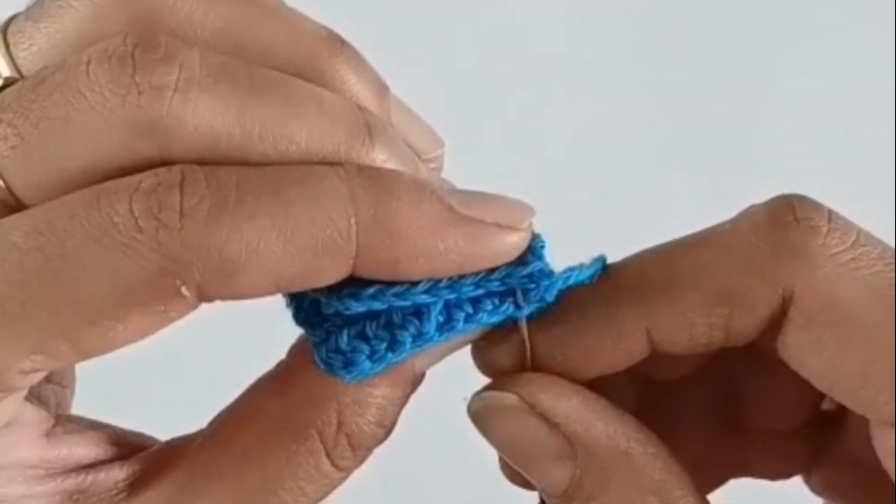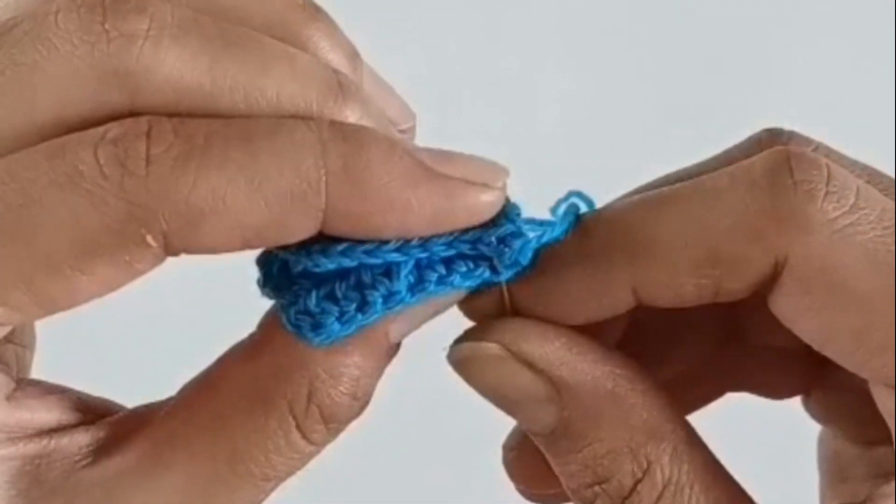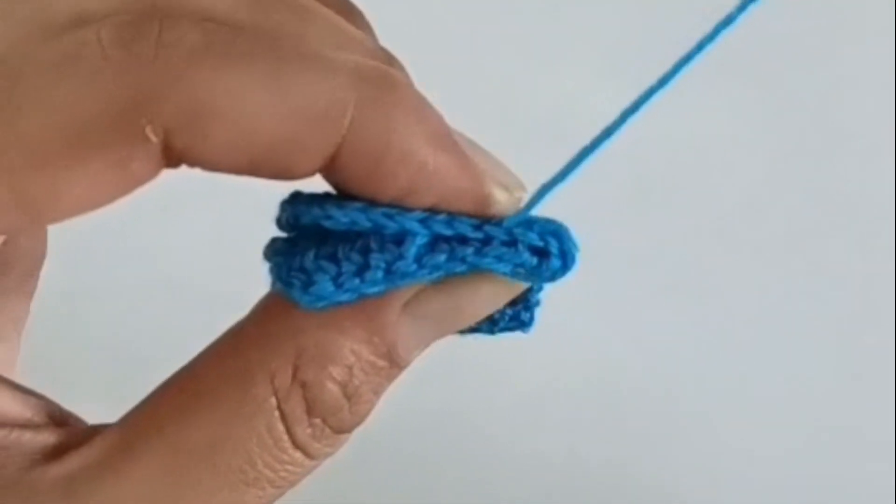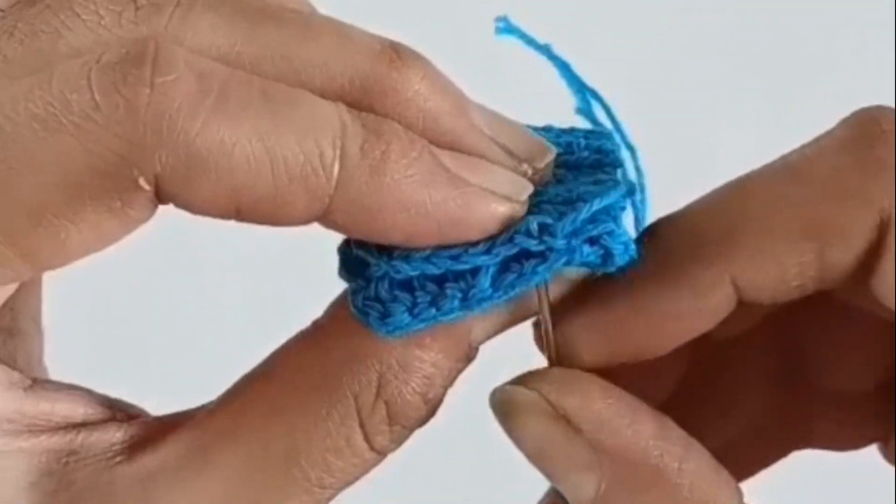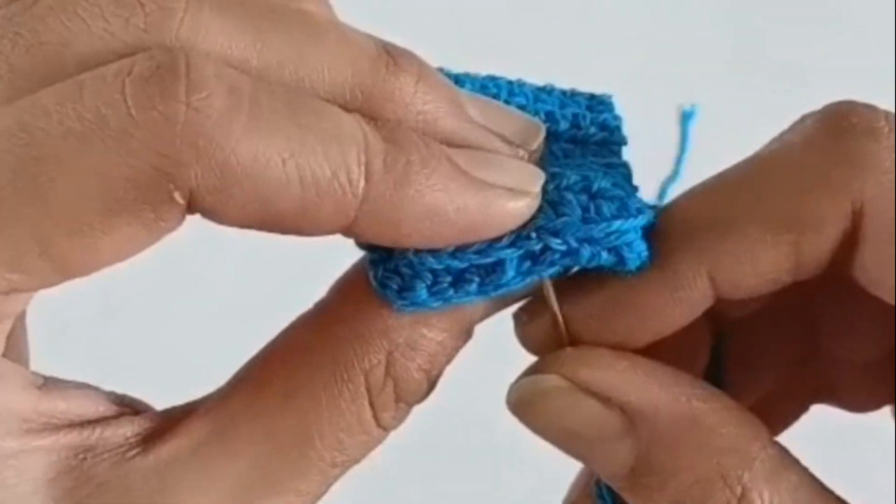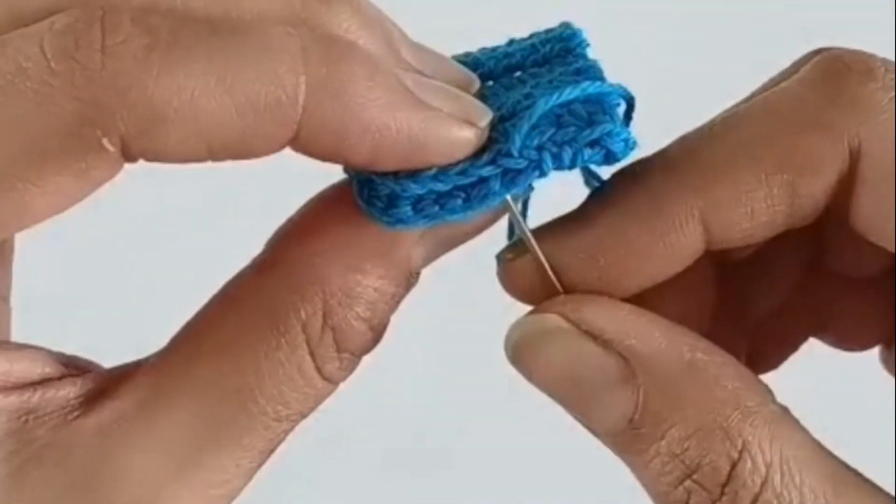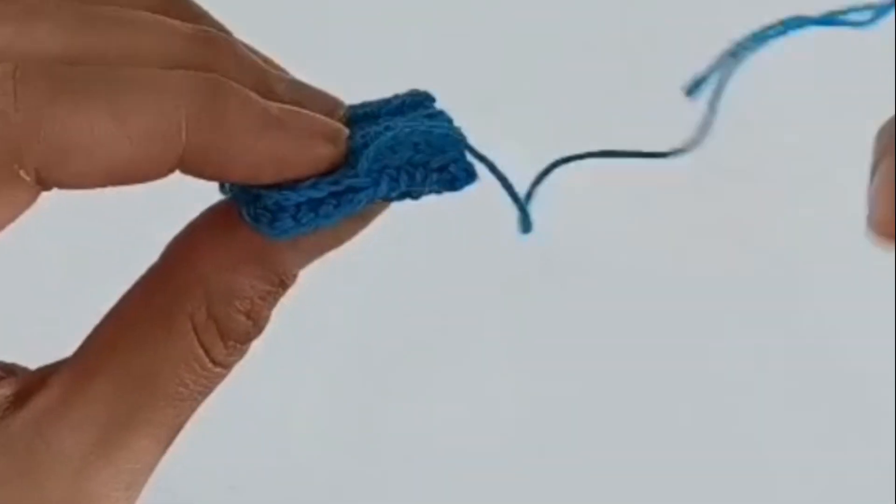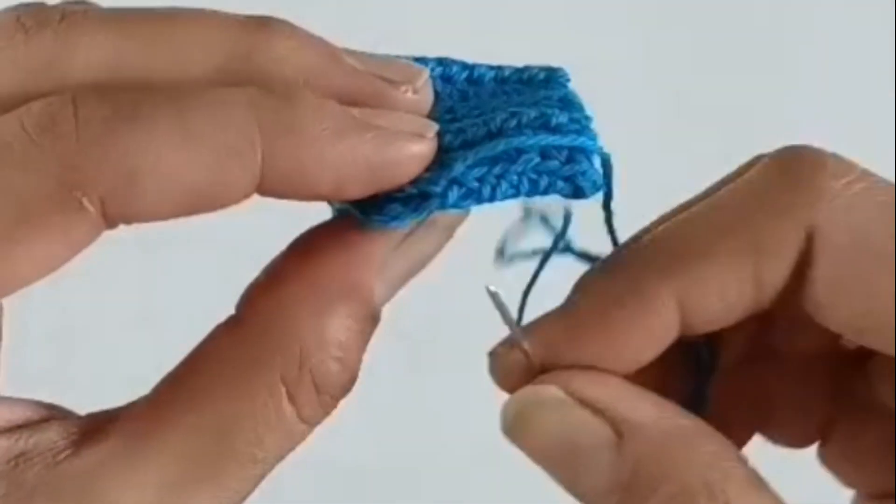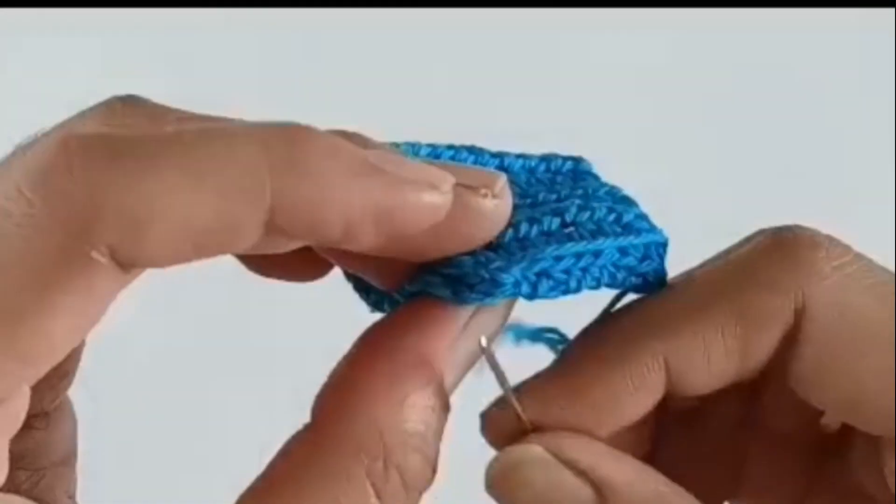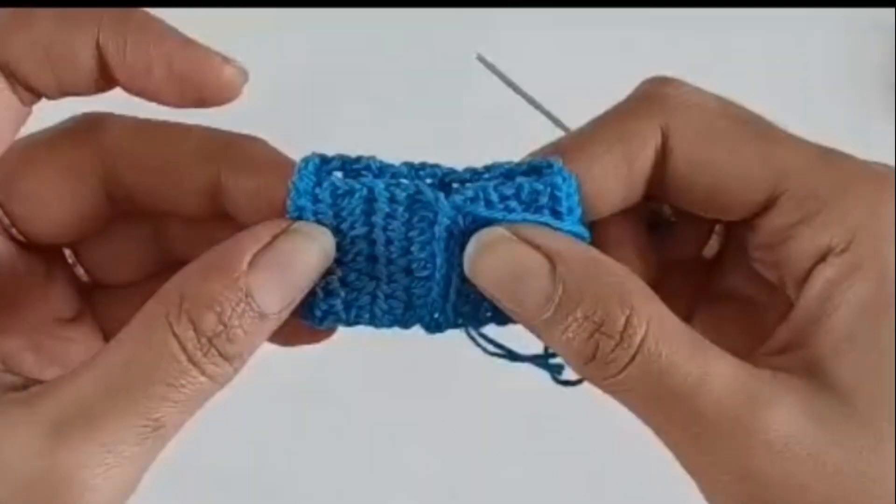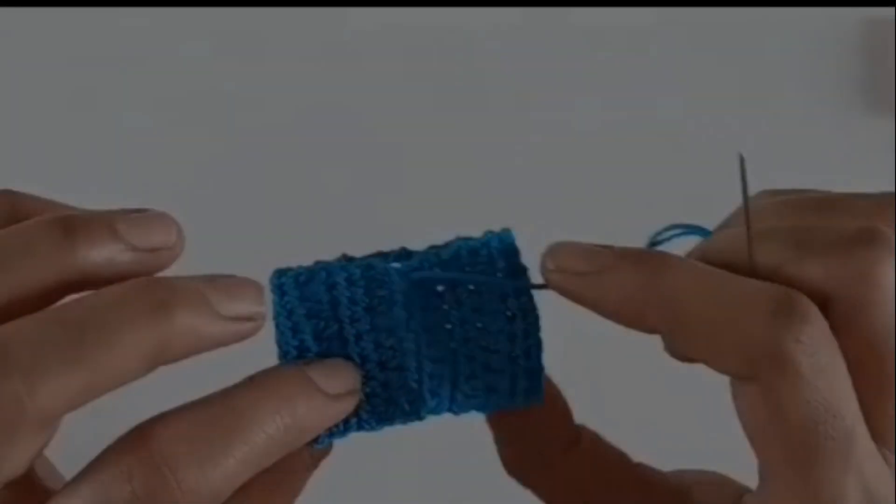Going through the stitch on this side and the front loop of the stitch on this side, join the two ends together. So in this way I have joined the two ends together, placing the joint part on the back side.